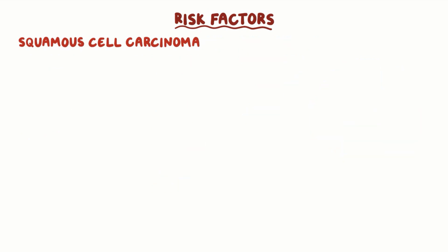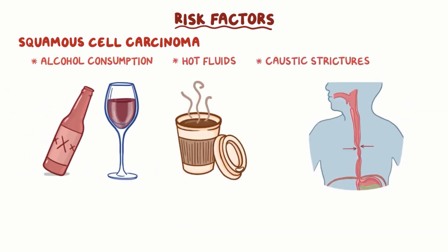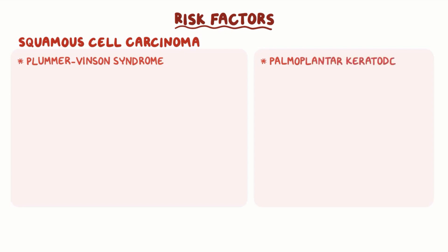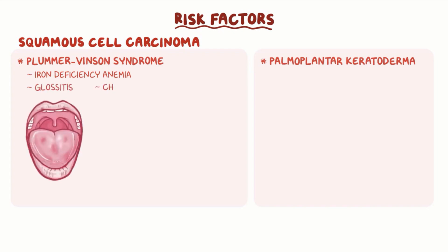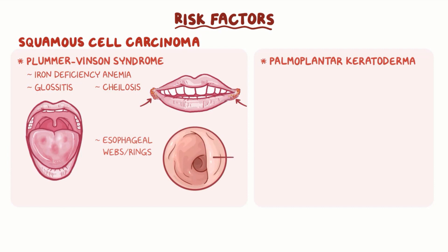Specific risk factors for squamous cell carcinoma include alcohol consumption, hot fluids, and caustic strictures, which is the narrowing of the esophagus following ingestion of a caustic substance like household bleach. Other predisposing conditions include Plummer-Vincent syndrome and palmoplantar keratoderma. Plummer-Vincent syndrome associates iron deficiency anemia, glossitis or tongue inflammation, cheilosis or inflammation and cracking of the corners of the mouth, and esophageal webs or rings, which are concentric extensions of normal esophageal wall into the esophageal lumen that can cause difficulty swallowing.